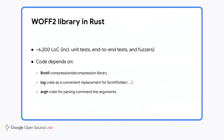The Rust port depends on the Brotli library for compression and decompression, and also depends on the log crate, which I use as a convenient replacement for printing to stderr. I could have done logging using just the standard library printing functions, but the log crate was more convenient and made the intent clear. Lastly, the C++ code uses Apseo flags, but since there is no direct equivalent in Rust, I used the R crate, developed by the Fuchsia team.